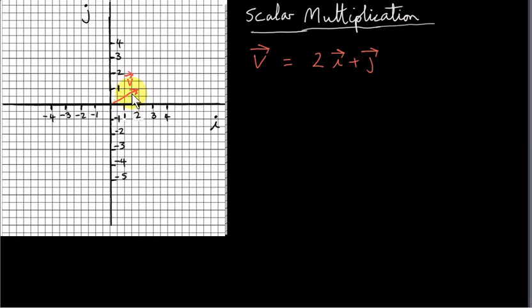Let's look at this vector v. It is 2i plus 1j — in other words, the coordinates of the head of the vector are 2, 1. x is 2, y is 1. It's the sum of two vectors: this vector here, which is 2i, and this vector here, which is 1j. We just add 2i plus 1j by the triangle law to get vector v.